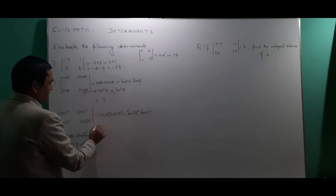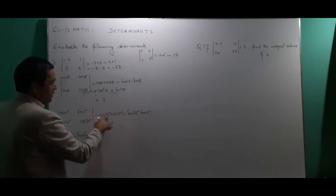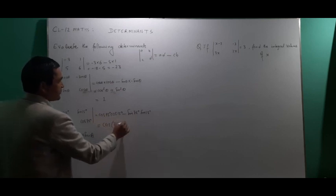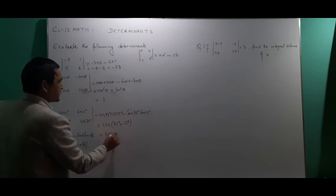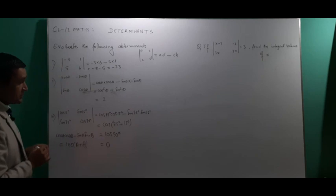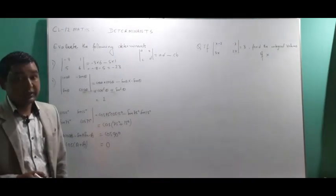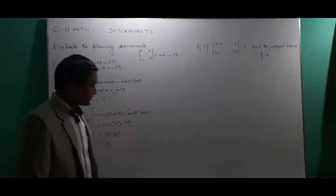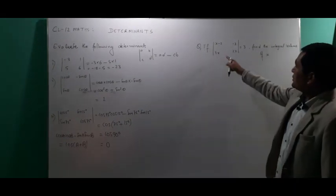Using this formula to simplify the question: cos of 75 plus 15 degrees equals cos 90 degrees, and the value of cos 90 degrees is 0. This method is very easy for expanding determinants. Now let's do one more question.